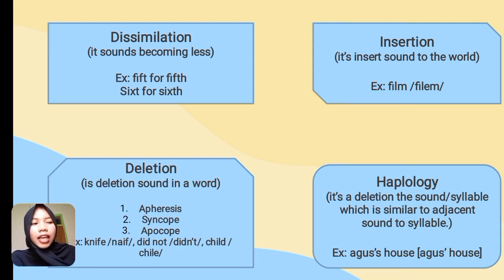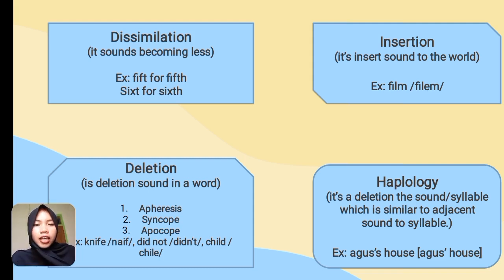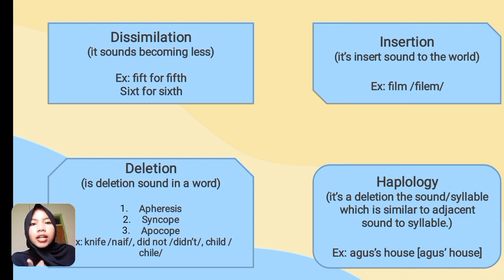For example, the word 'film'. In writing, film has four letters: F, I, L, and M. But when we pronounce it, it has five sounds: F, I, L, a vowel, and M. We insert a sound between L and M.